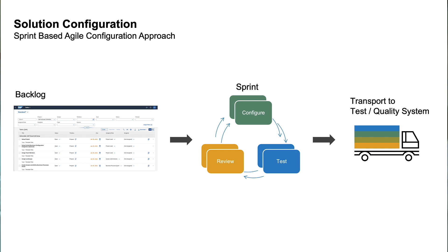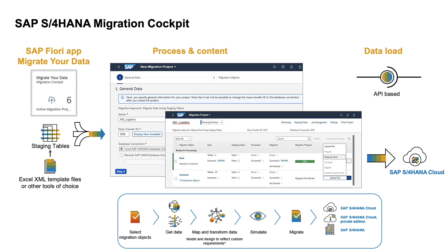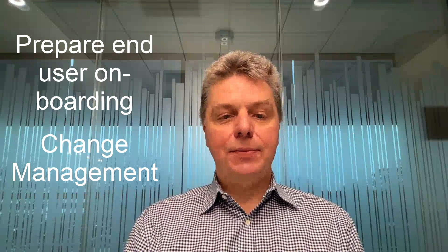This includes integrations and extensions. In parallel, the project team prepares data for migration and conducts migration loads to a test environment to ensure readiness for cutover. In conjunction with the technical and functional activities, the OCM team works to prepare and start onboarding of end users and change management for business stakeholders.